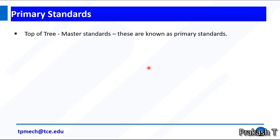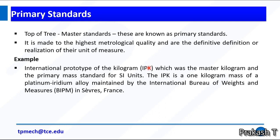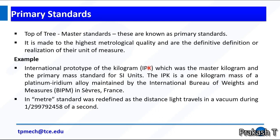Primary standard is the top of the tree, the master standard. It is made to the highest metrological quality and represents the definite definition or realization of their unit of measures. Example: International Prototype Kilogram, IPK, which was the master kilogram and the primary mass standard for SI units. The IPK is one kilogram mass of a platinum iridium alloy maintained by the International Bureau of Weights and Measures in France. The meter standard was redefined as the distance light travels in a vacuum during 1 divided by 299,792,458 of a second.